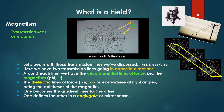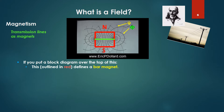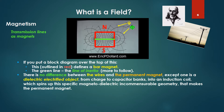This is a quite different view of what these lines are. The crossing points in this diagram are the electromagnetism in this complex field. If you put a block diagram over the top of this representation of the wires, the outlined-in-red area defines a bar magnet. The green line is the line of inertia. There's no difference between the wires and the permanent magnet, except one: the permanent magnet is a dielectric electrified object, created so from charge to capacitor banks into an induction coil, which spins up a specific magneto-dielectric incommensurable geometry that makes the permanent magnet.